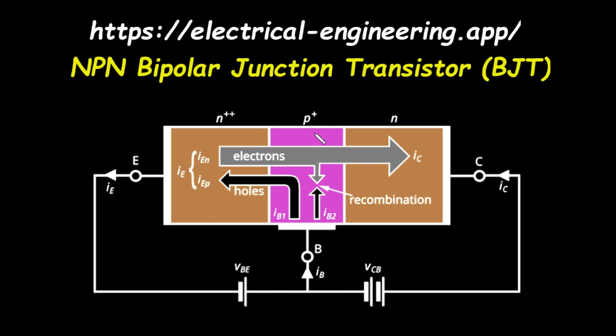The plus signs indicate the level of doping. N double plus means the emitter is very heavily doped with impurities that create an abundance of free electrons. P plus means the base is also heavily doped, but with impurities that create a high concentration of holes. Finally, the N collector is lightly doped, meaning it has fewer free electrons compared to the emitter. Another critical design feature, which is key to the transistor's operation, is that the base region is physically very thin.